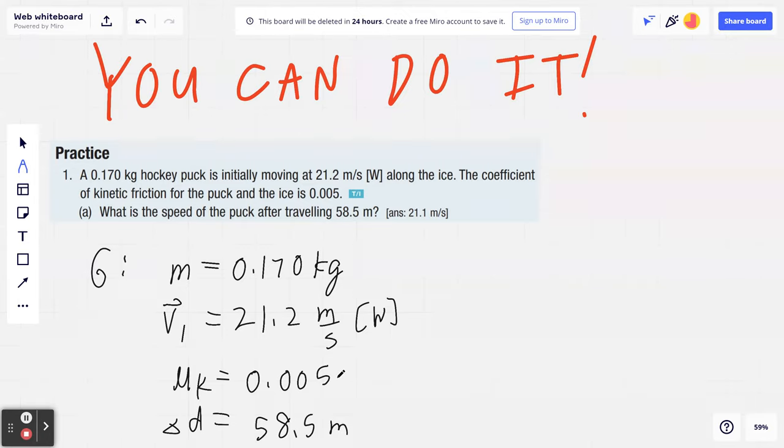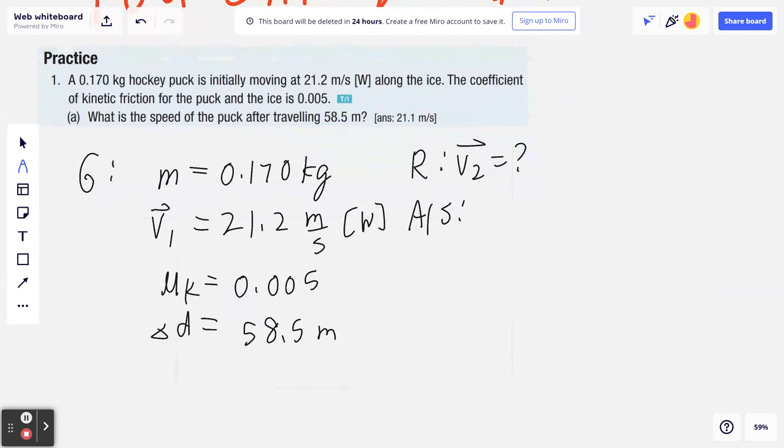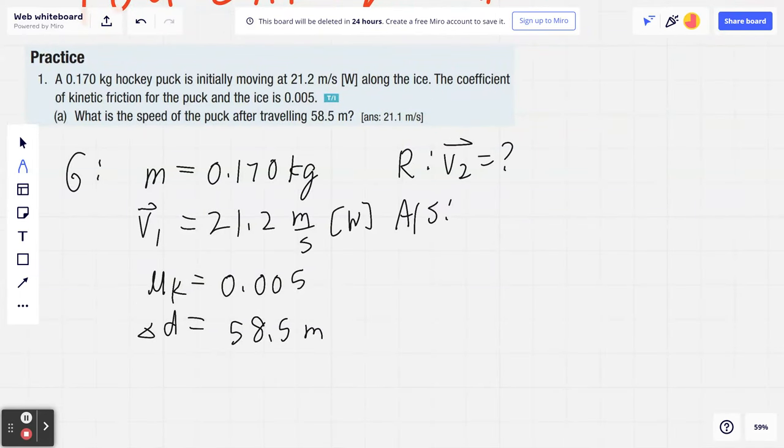Now here's how you solve this. What you're looking for is the speed of the puck after traveling 58.5 meters, so you're looking for V2. You're really looking for V2 in terms of magnitude and direction. Here's the most important part: begin with the end in mind. When you think about V2, you're thinking about the kinematic formulas.